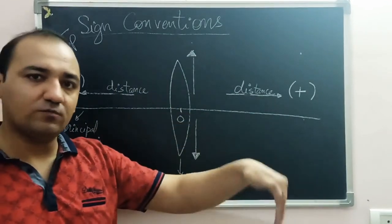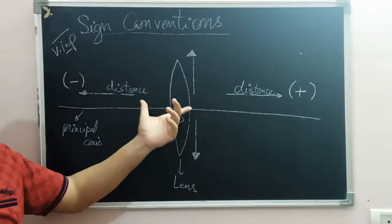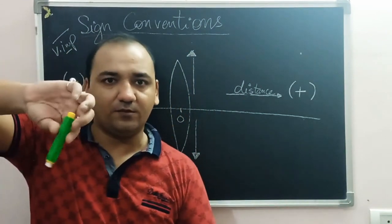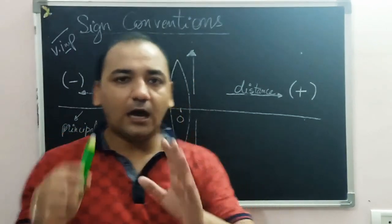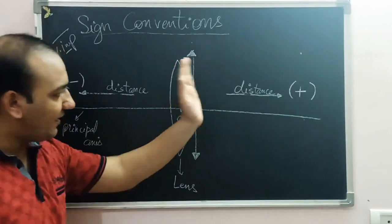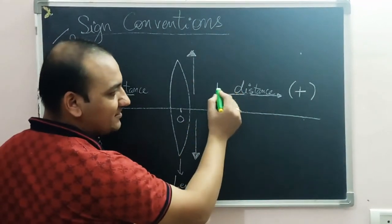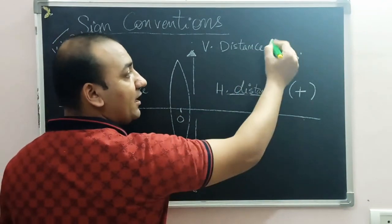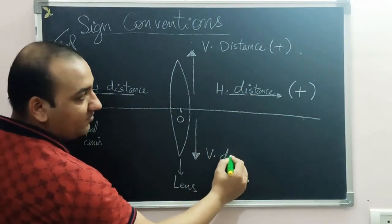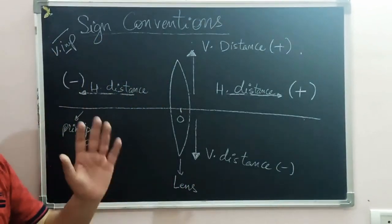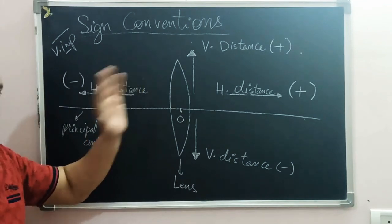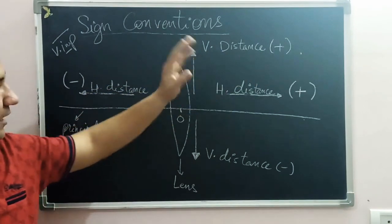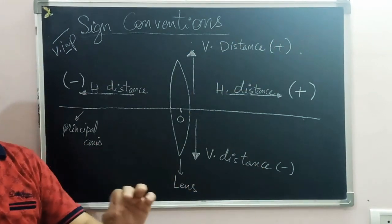For vertical distances: if the image or object is above the principal axis, the vertical distance (height) is positive; if it is below the principal axis, the vertical distance is negative. Since objects are always placed upright by standard convention, the object's vertical distance (height) will always be positive. The image height will be positive if erect and negative if inverted.